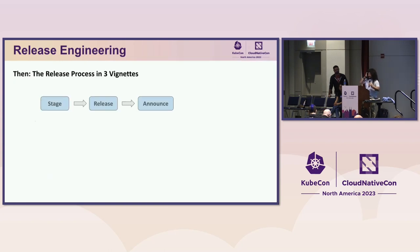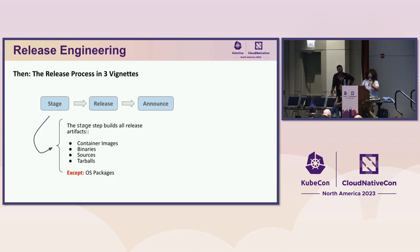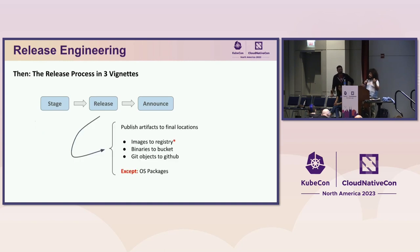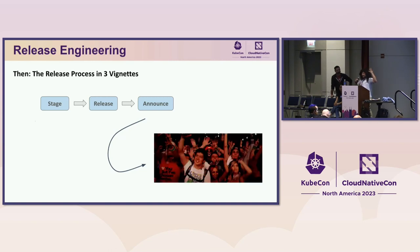I'm going to give you a brief overview of the release process. In three phases: the first phase is the stage phase, where we build everything — the container images, the binaries, packaged sources, tarballs, and everything going out with the release, except for the OS packages. The next phase is the release phase, where we push images to registries, binaries to the bucket, and Git objects to GitHub — again, not the OS packages. Then we announce the release.